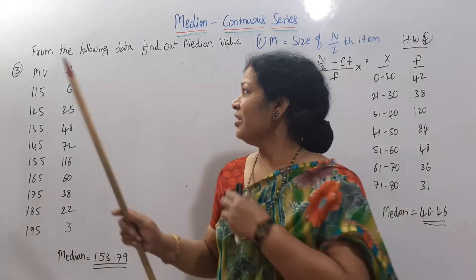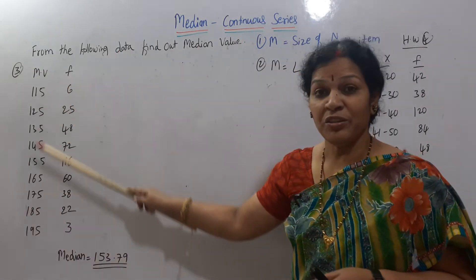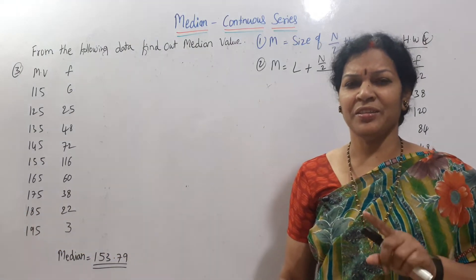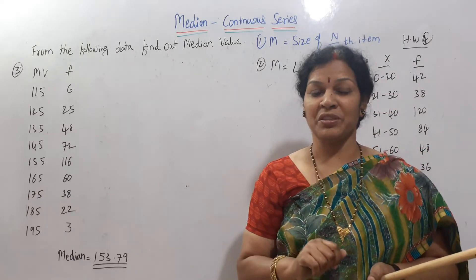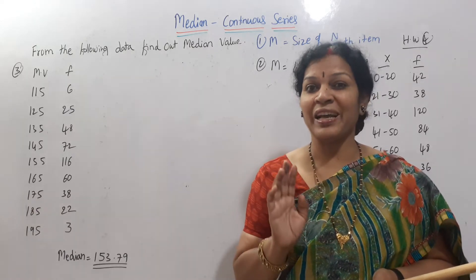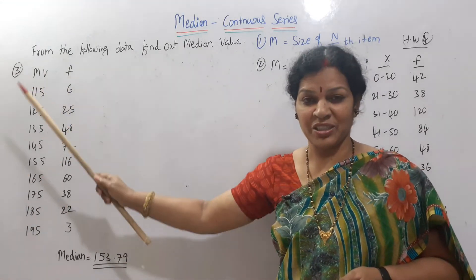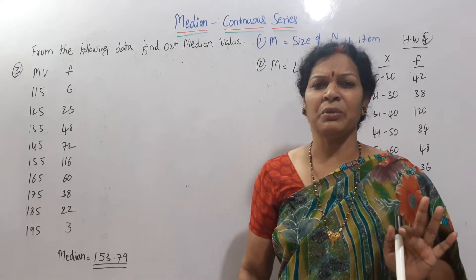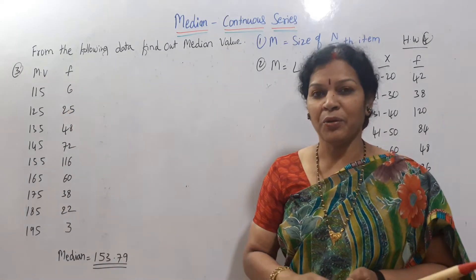Now today's problem is here, median. Find out the median from the following data. Mid value is given, x is not given. Generally, did you remember arithmetic mean? Arithmetic mean x frequency was given. First we used to find out the mid value. Mid value means middle value of the class interval. So that is given. Now how to find out?